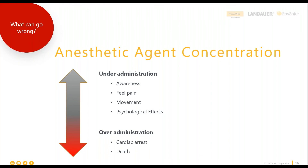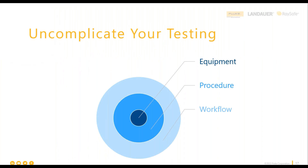Now I want to jump from understanding the risks to how we can uncomplicate your testing. We've bucketed this into three layers: first, having the right test equipment at its core; upon that, making sure you're using the right procedure with that equipment; and if you really want to make testing as uncomplicated as possible, take a look at uncomplicating your workflow and all of your tasks to be done. The first stop is uncomplicating your test equipment.